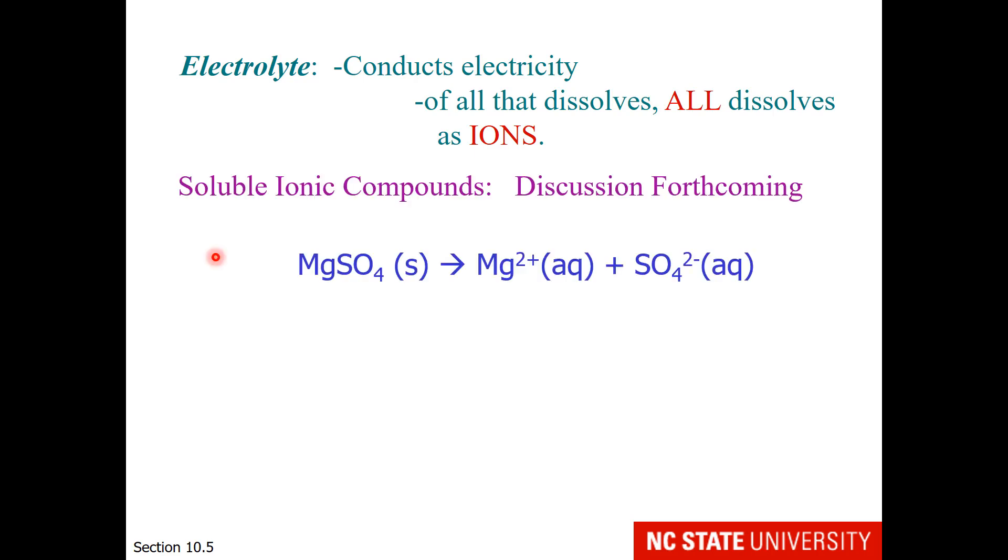Electrolytes are soluble ionic compounds. We can see that magnesium sulfate, when it dissolves, makes a cation and an anion. To determine which ones are soluble, we'll get to that in the next section of this lecture.